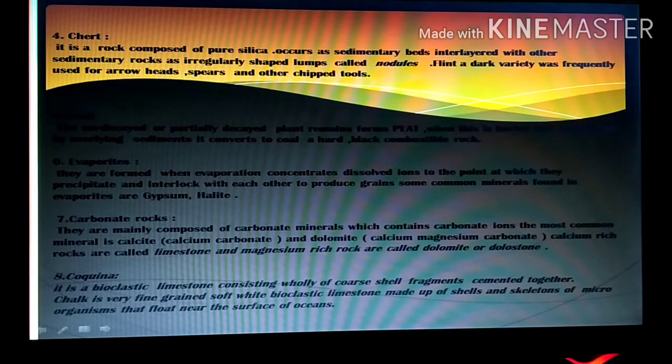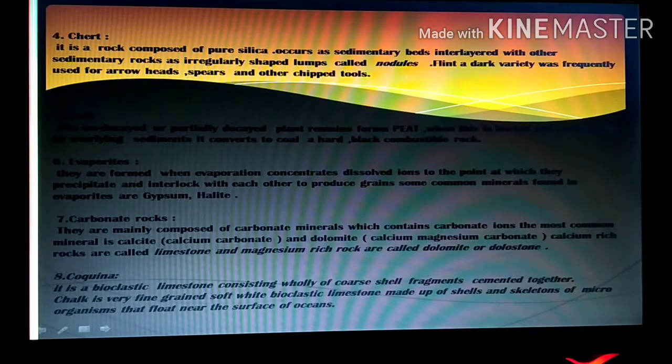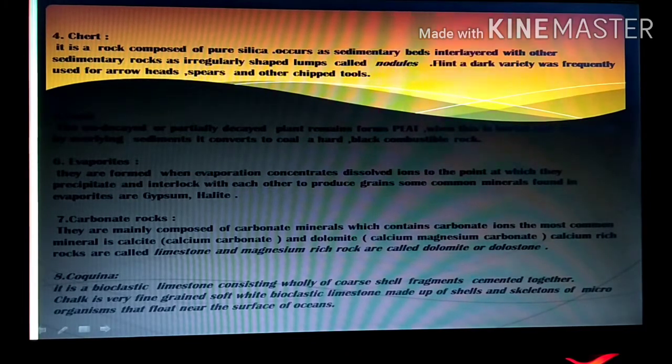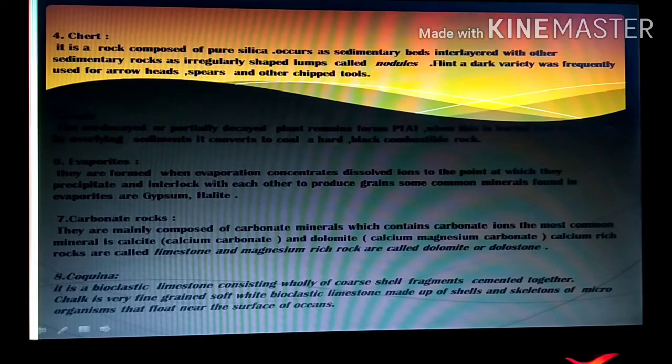Then we have coal. The undecayed or partially decayed plant remains, forms peat which is then buried and compacted by overlying sediments. And then it is converted into hard-resistant rock known as coal. And it is a combustible rock.